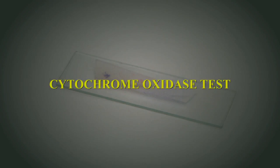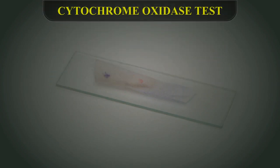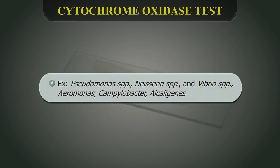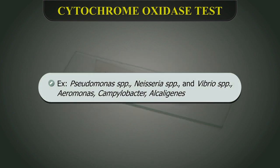Cytochrome Oxidase Test. This test is used to help in the identification of organisms which produce the enzyme cytochrome oxidase. Some examples are Pseudomonas species, Neisseria species, and Vibrio species.